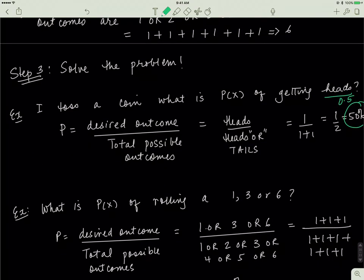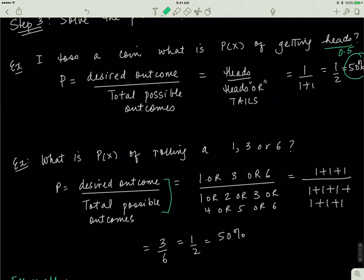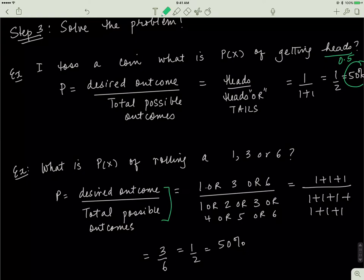Another example: what's the probability of rolling either 1, 3, or 6 on a die? The desired outcomes are 1 or 3 or 6, and those ORs become plus signs: 1 plus 1 plus 1, divided by the total outcomes of 6. That gives 3 over 6, which equals 0.5 or 50%.